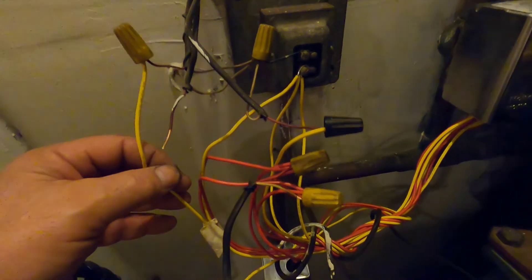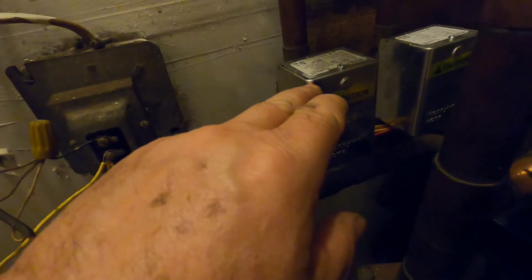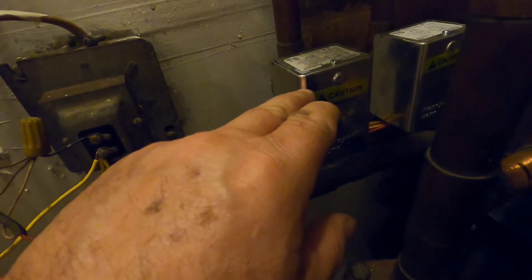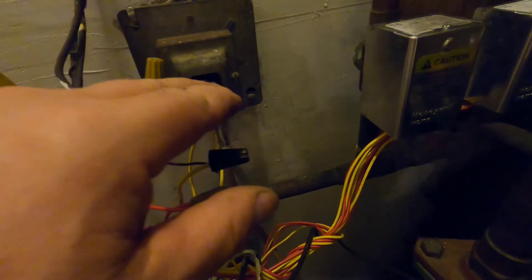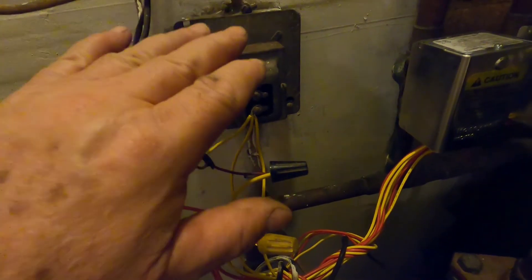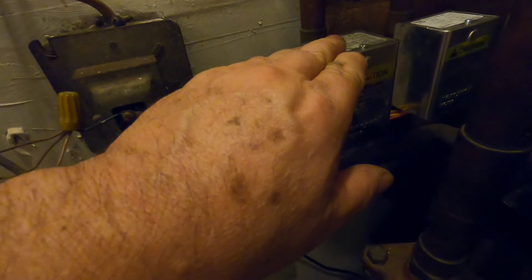And it also gets connected to the zone valve. To complete the circuit, the second wire from the motor inside the zone valve comes out and gets connected to the transformer. That's your connection for the motor inside the transformer.